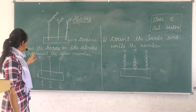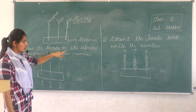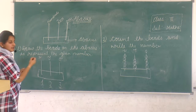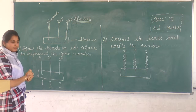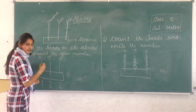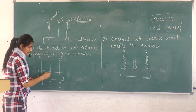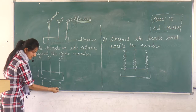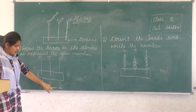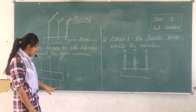Now our sum — number one: draw the beads on the abacus to represent the given number. See, one abacus is given here with three spikes and three digits. Now you see what this number is — three — then you see on one spike.